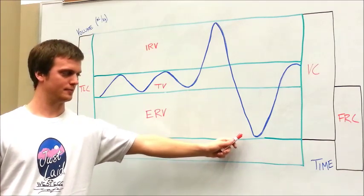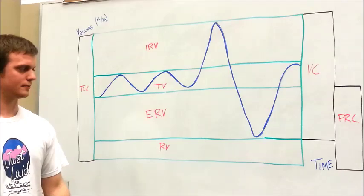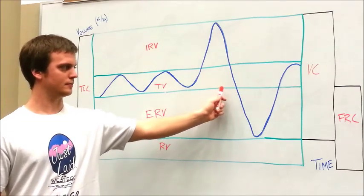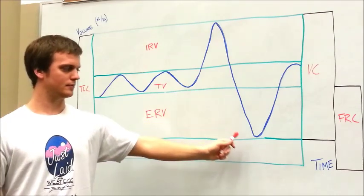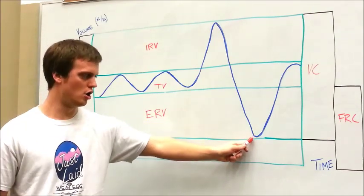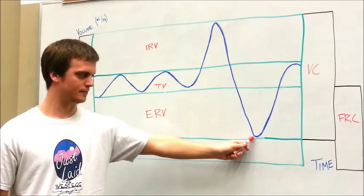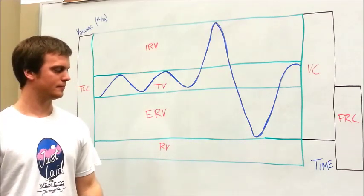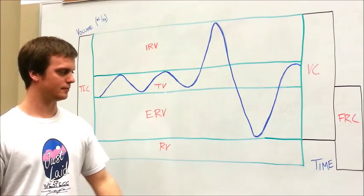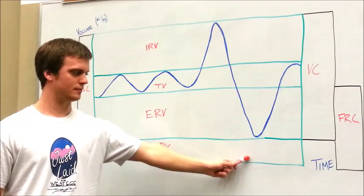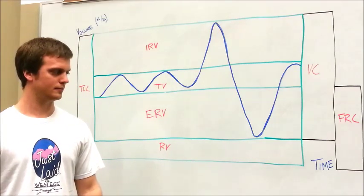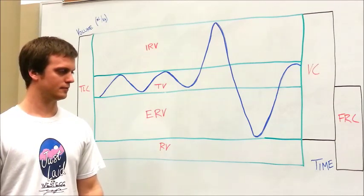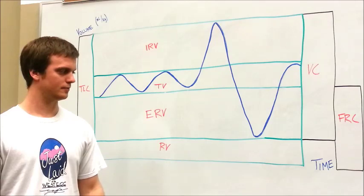That is going to be their expiratory reserve volume. That's the difference from the bottom of that tidal volume, when they're naturally breathing and blow out all their air, to the point where they blow out as much air in the lungs as they can. Notice that as far down as they got, there's still a little bit of air left in the lungs. That's the residual volume—the air that's within the alveoli keeping them open or the dead space within the airway.